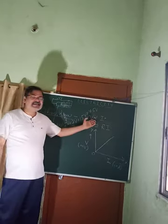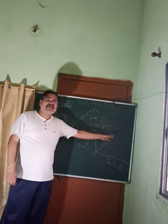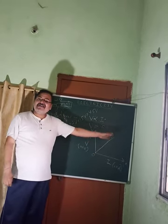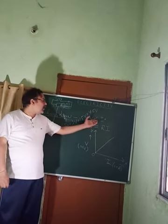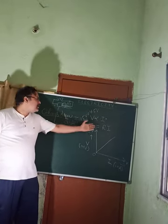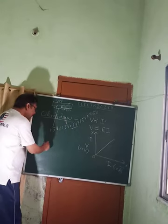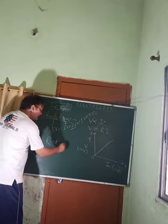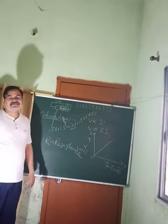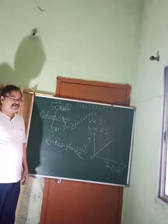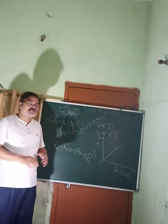Whenever there is a proportionality, we remove the proportionality sign and introduce a constant. Here that constant R is resistance. Resistance is the amount of opposition a conductor offers to the current. It is a scalar quantity, denoted by R. Its SI unit is ohm, named after the scientist Ohm, denoted by the Greek alphabet omega (Ω).